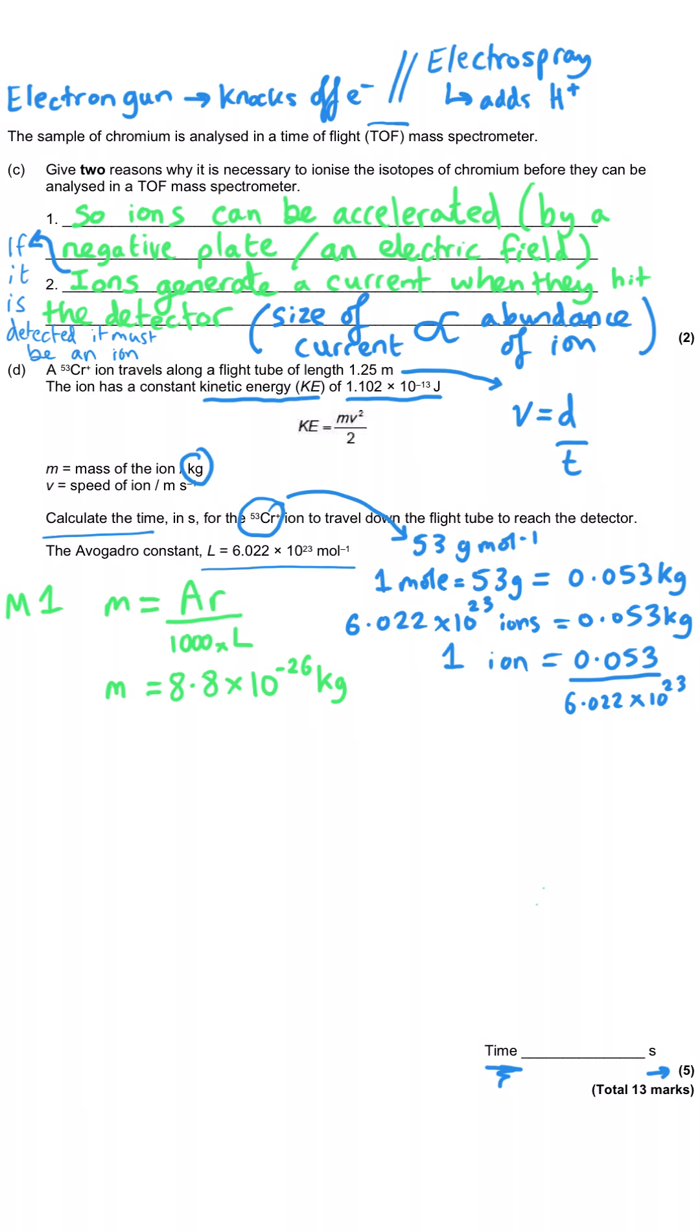Then from there we need to substitute all the values that we have into the equation for v, because we need to work out the speed of the ion in meters per second. But first let's rearrange it. The expression as we've been given rearranges to v squared is equal to 2 times the kinetic energy divided by the mass of one ion that we've just calculated. And so we then calculate what v squared is, substitute the values of 2 times by 1.102 times 10 to the minus 13 that they gave us in the question, divided by 8.8 times 10 to the minus 26 that we've just calculated. That gives us an answer of 2.504 times 10 to the 12. That's v squared. Then the third mark is going to be to square root that quantity that we've just calculated, which will give us an answer of 1.58 times 10 to the 6 meters per second, which is a really big number. The ions travel through the mass spectrometer really, really quickly.